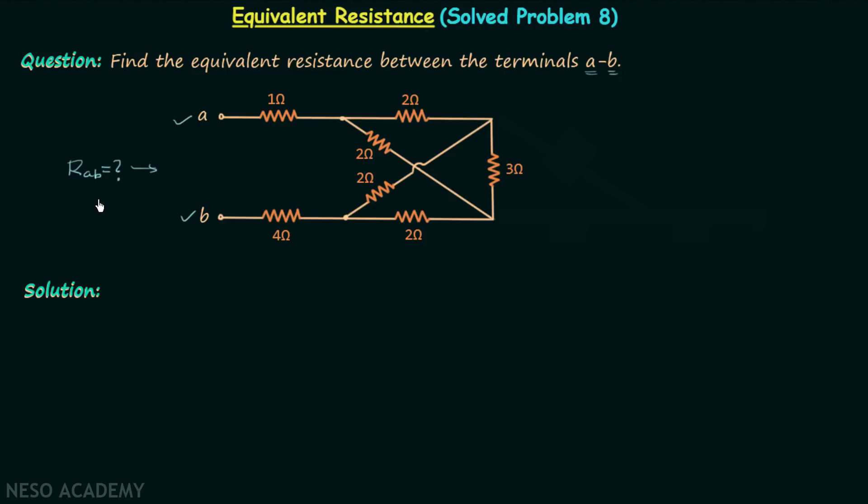When you analyze the given network, you will observe that we cannot find the series or parallel combination of resistors in this arrangement, so we are required to rearrange our network.